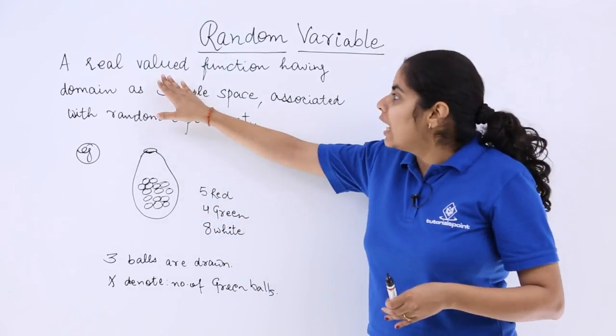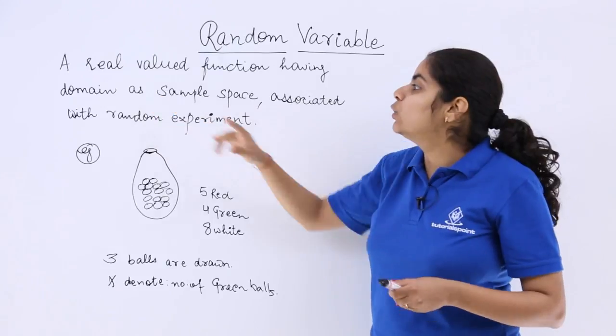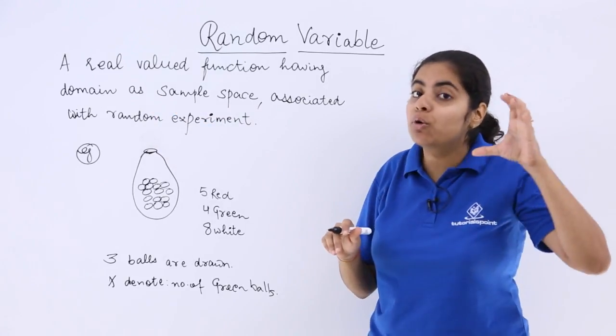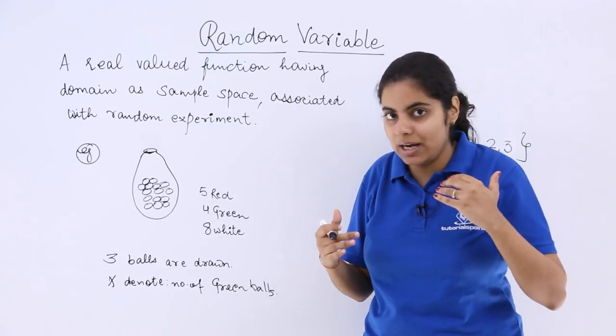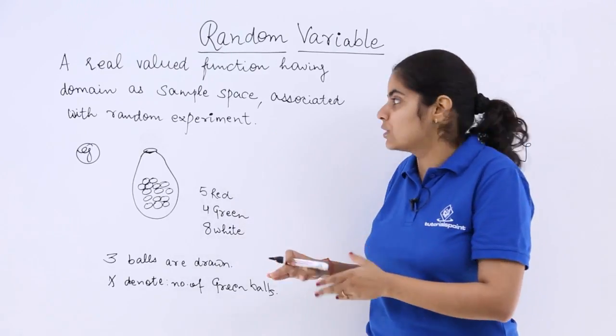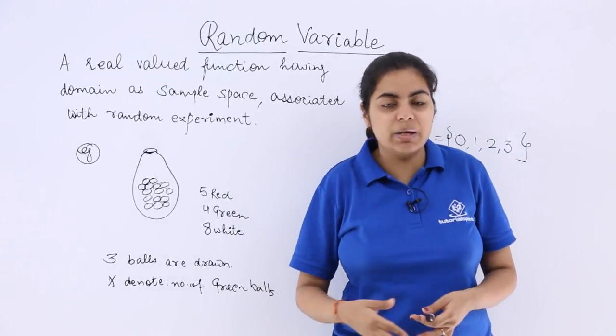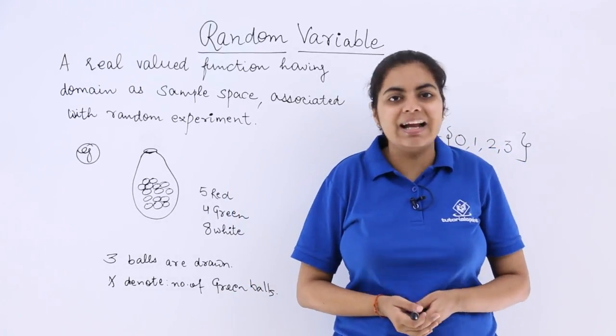Now again let's move to the definition. A real valued function. So this is a real valued function having domain as the sample space. Now domain is what? All the x elements right. So whatever the sample space would be there the domain will be the sample space. And that is definitely associated with a random experiment. Hence it is called as a random variable.